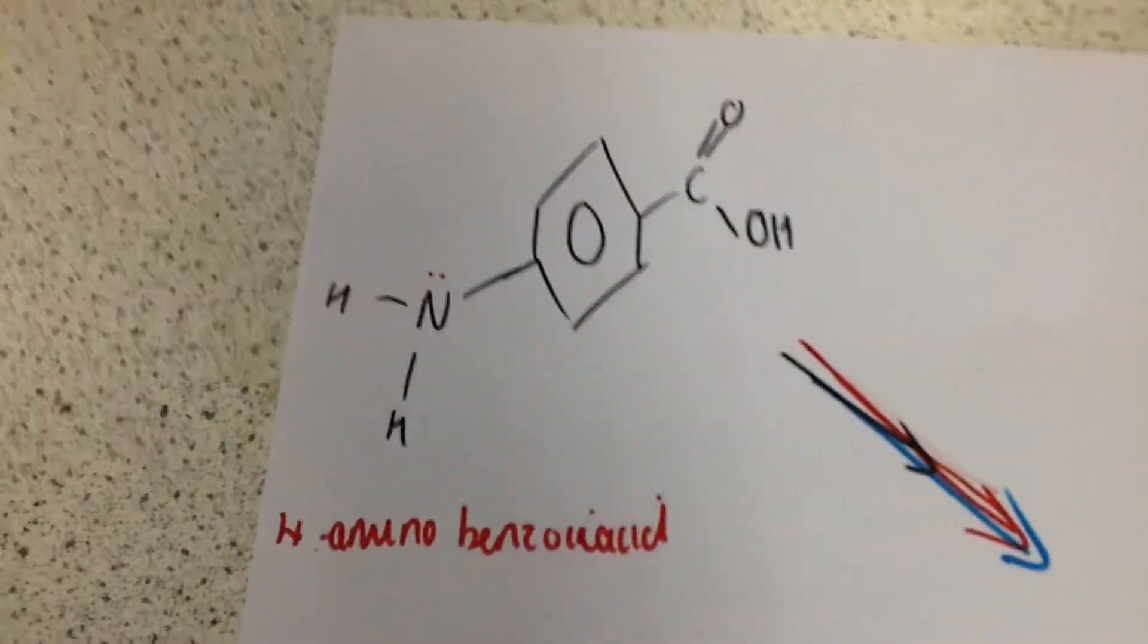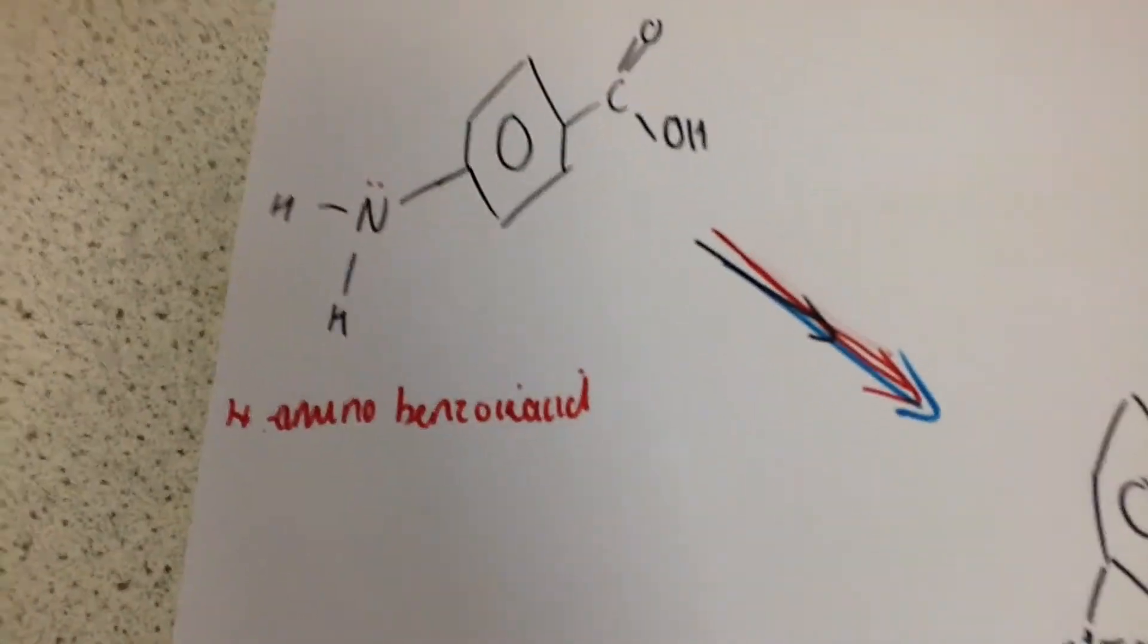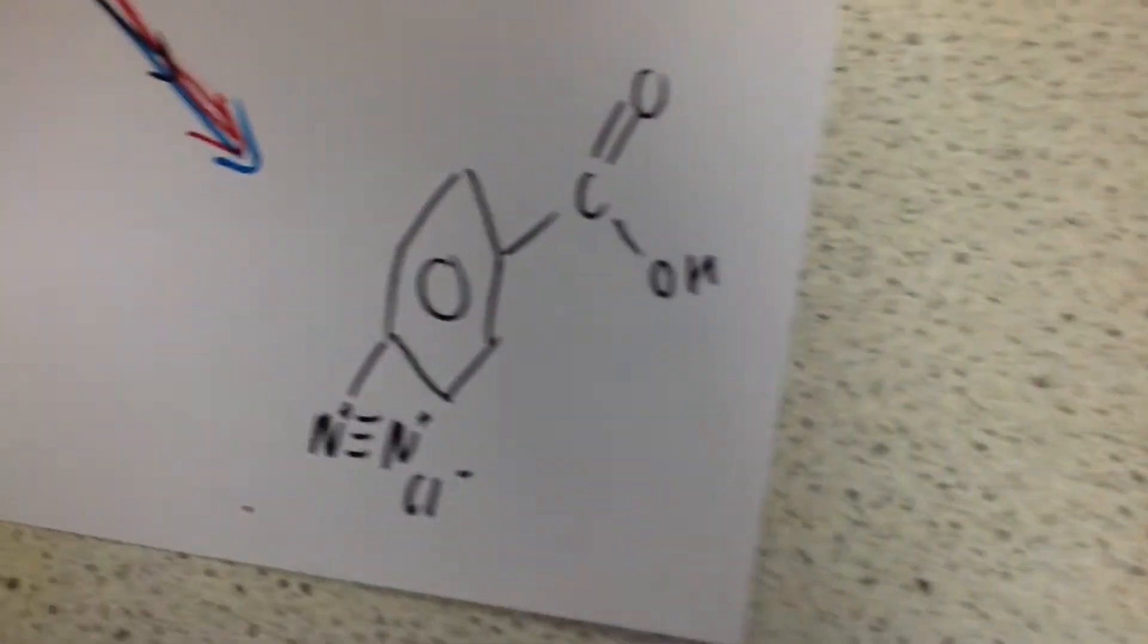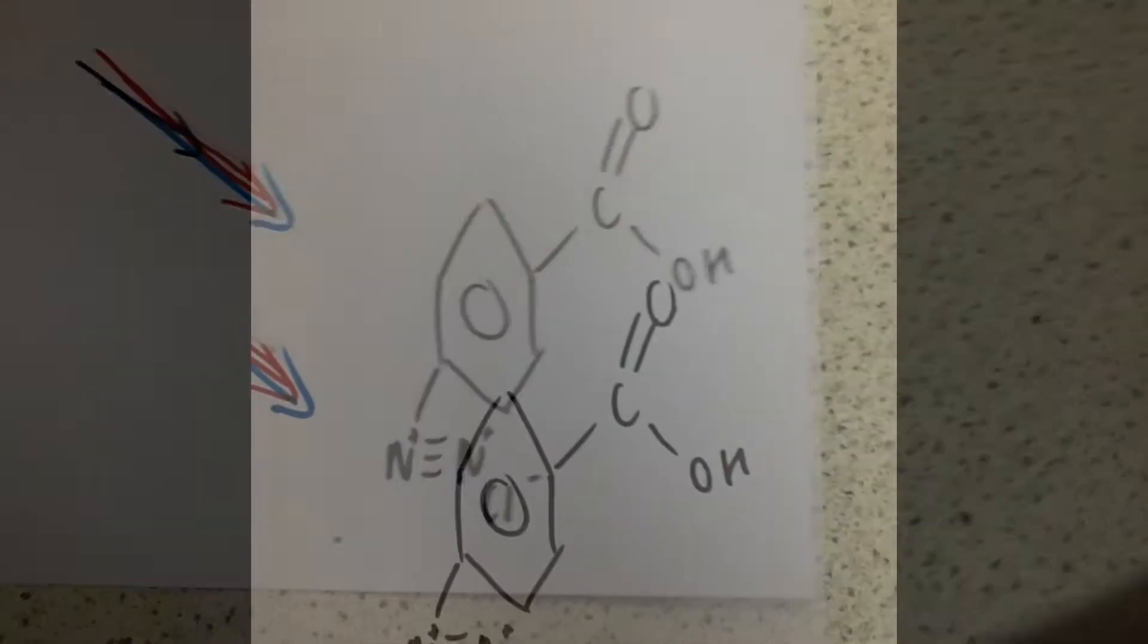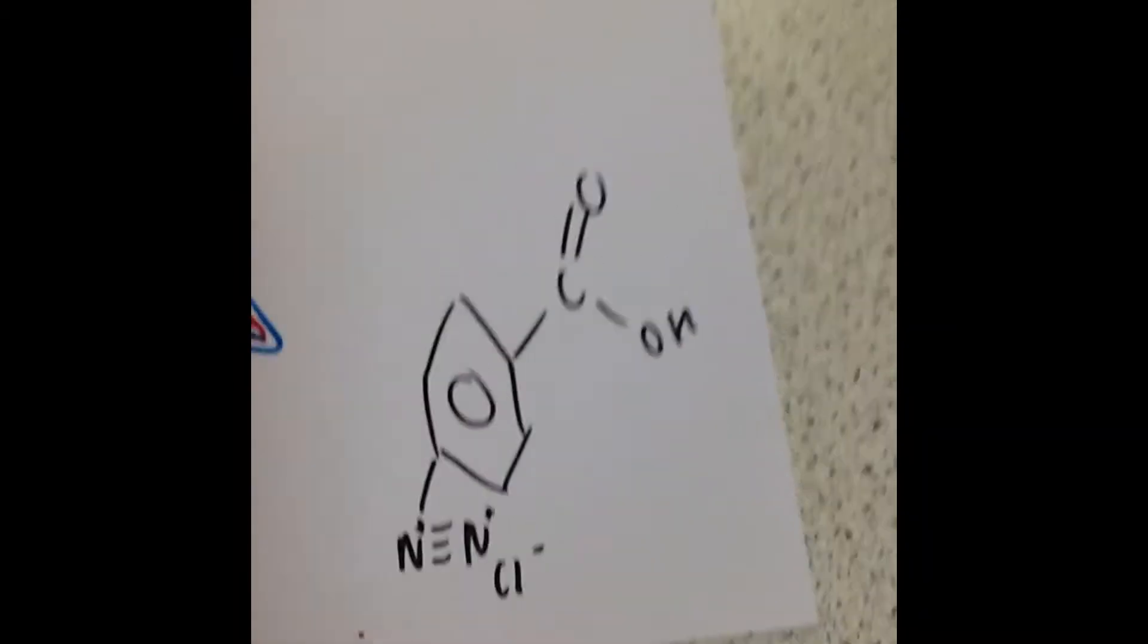This is diazotization. Our reaction will go from 4-amino benzoic acid to form this molecule. This diazonium molecule will be formed when we mix our two solutions together.